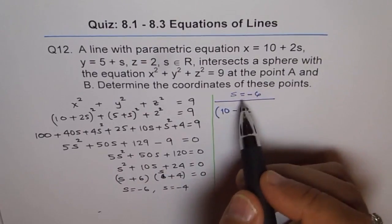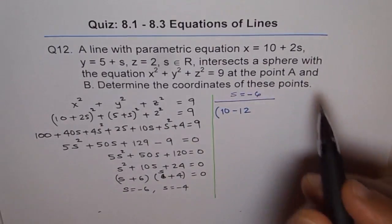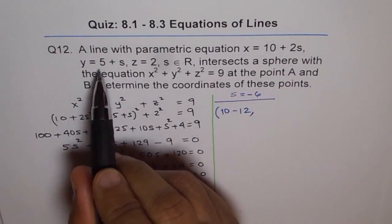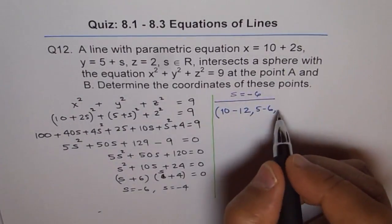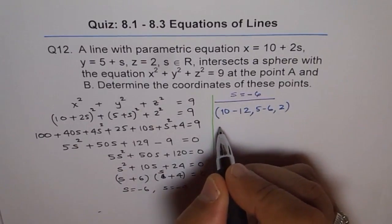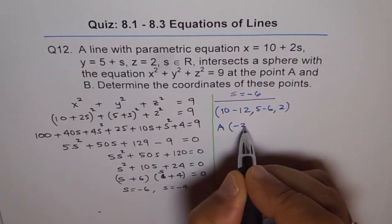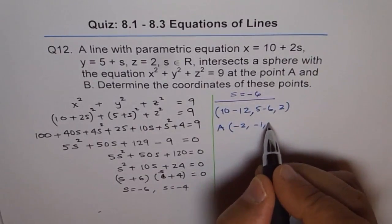So I am substituting s as minus 6 to find the first set of points and let me call it A. y is 5 minus 6 and z is 2. So I can write point A as 10 minus 12 is minus 2, 5 minus 6 is minus 1 and z is 2.